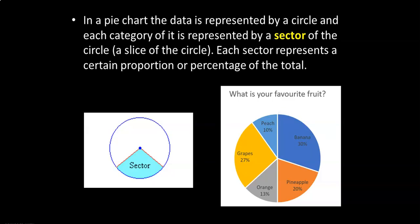In a pie chart the data is represented by a circle and each category of it is represented by a sector of the circle. A sector is nothing but a slice of the circle. Each sector represents a certain proportion or percentage of the total.